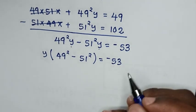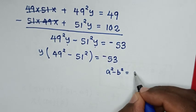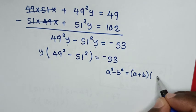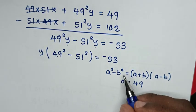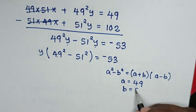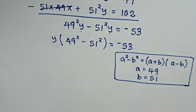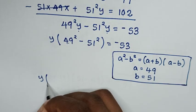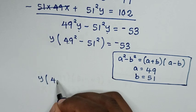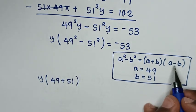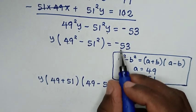Then, in the next step, this part is a perfect square difference, so we apply the same rule: a squared minus b squared equals (a plus b)(a minus b). Comparing 49 squared and 51 squared, a equals 49 and b equals 51. So our equation becomes y times (49 plus 51) times (49 minus 51) is equal to negative 53.